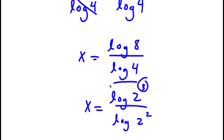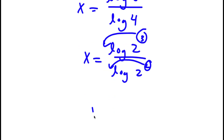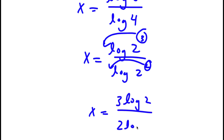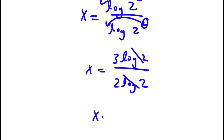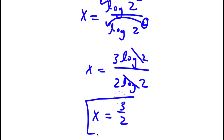Now I can move these exponents to the front. So now I have x is equal to 3 times log 2 over 2 times log 2. These two log 2s can cancel out, so I'll simply be left with x is equal to 3 over 2. This is my answer.